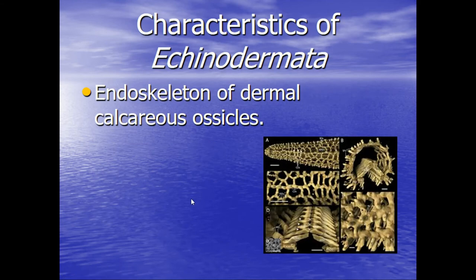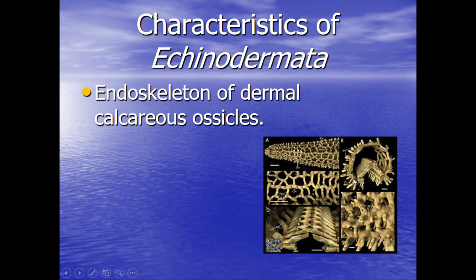Echinoderms have an endoskeleton of what is called dermal calcareous ossicles, meaning mineralized calcium that forms an internal framework. In this picture you can see one of the arms from above — the support framework provided by the mineralized calcium makes a kind of net to help support the body of the sea star. Looking down the arm, you can also see the groove on the underside and that net of calcium supporting the body.